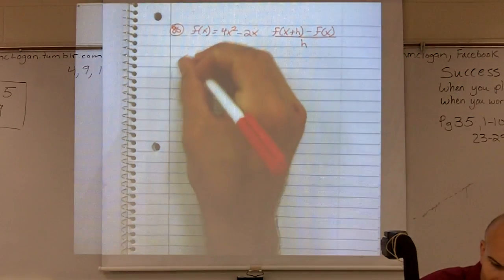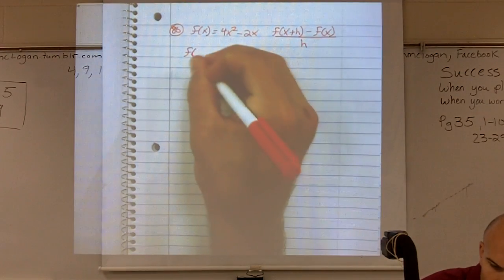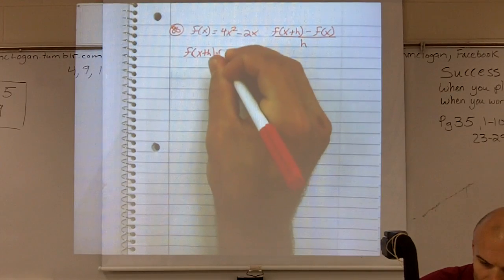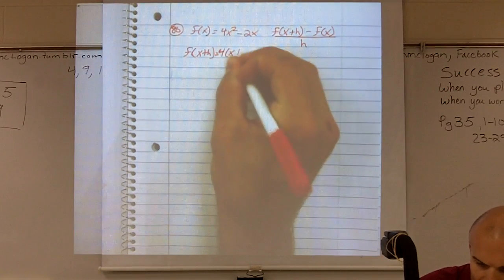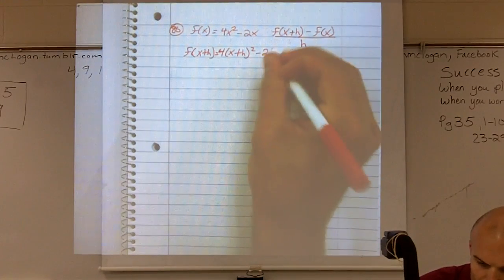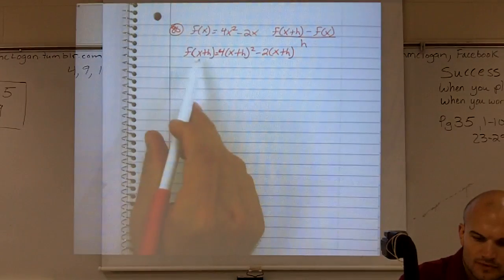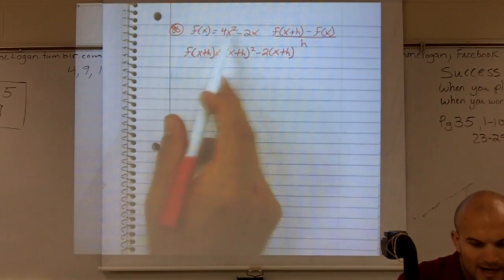So if I do f of x plus h, I'm going to obtain 4 times (x plus h) squared minus 2 times (x plus h). Right? I just plug in x plus h in for my x variable.